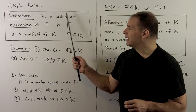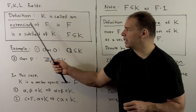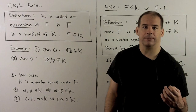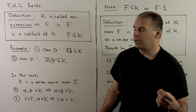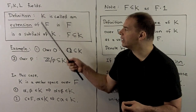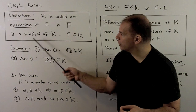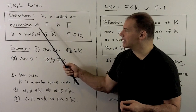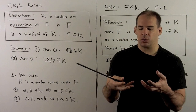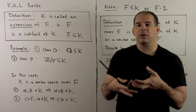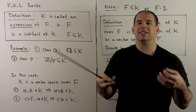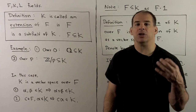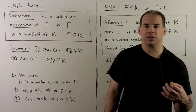Definition: K is called an extension of F, or equivalently, F is a subfield of K. All we're doing here is switching the language. The idea behind an extension is we're going to build out from an old field to get a new field — usually by adjoining elements.